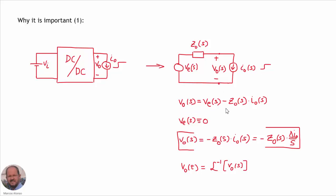From this we can obtain the output voltage in a general situation. If we are not considering perturbations on the voltage source, then we can make that voltage source null. We can obtain the perturbation on the output voltage using this expression. If the current is a step transient, which has this expression in the Laplace domain, then we will have this value for the perturbation on the voltage. From this we can obtain the inverse Laplace transform and finally get the evolution of the voltage in time.